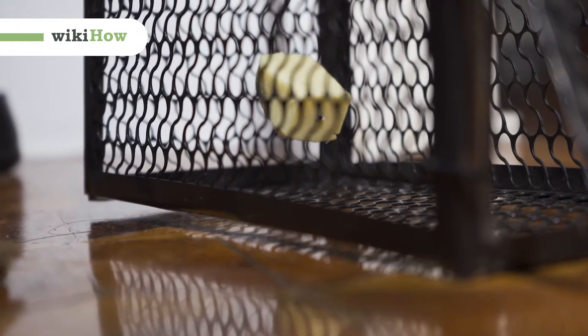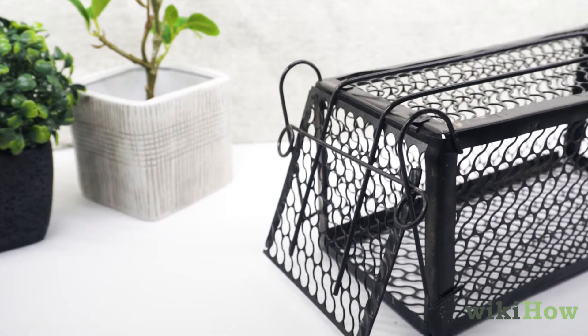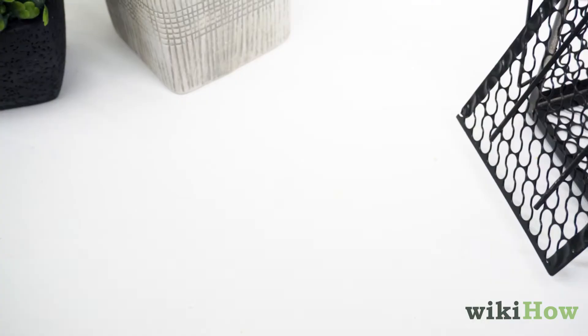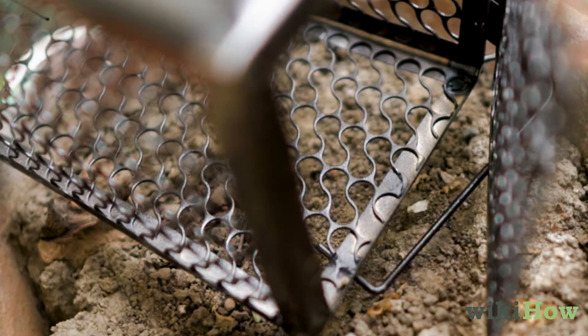To catch and get rid of mice, buy live traps and wear gloves to place bait, like peanut butter or cheese inside. Set the traps near droppings or the nest and set mice free in the woods when you catch them.